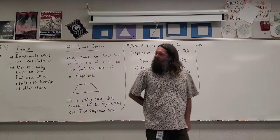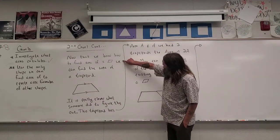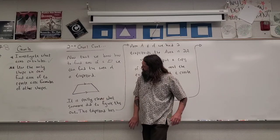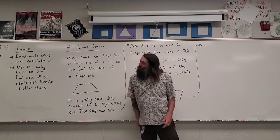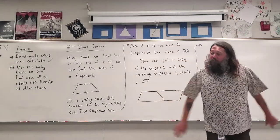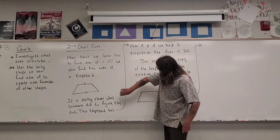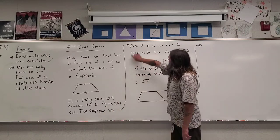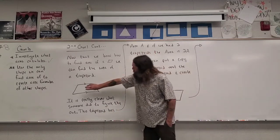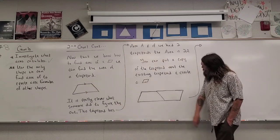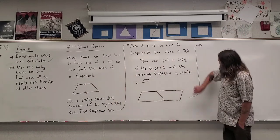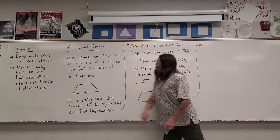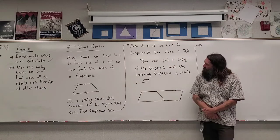Now we know how to find the area of a parallelogram, we can find the area of a trapezoid. A trapezoid has one pair of parallel opposite sides that are not congruent. It's really clever what someone did to figure out this area. Let's say this trapezoid has area equal to A. If we have two of these trapezoids, the area is 2A. You can put a copy of the trapezoid next to the existing trapezoid and create a parallelogram.